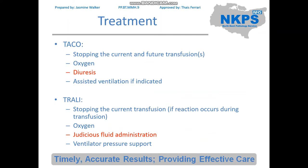For treatment: in TACO, you would stop the current and future transfusions — remember this is due to fluid overload, so you don't want to add more fluid. Oxygen saturation will be low so they need to be given oxygen. Diuretics are the treatment option for TACO, and if needed, assisted ventilation should be given. For TRALI, you would stop the current transfusion, as if it's caused by an antibody in that product you don't want to continue. Again, oxygen should be given. They should be given fluids — not diuretics — and ventilator pressure support.